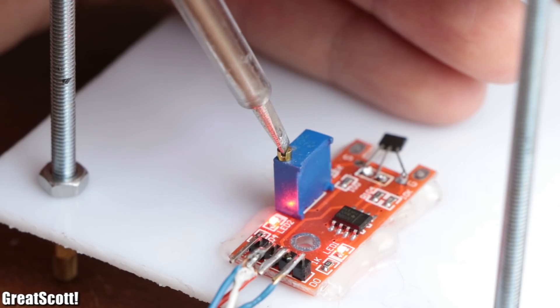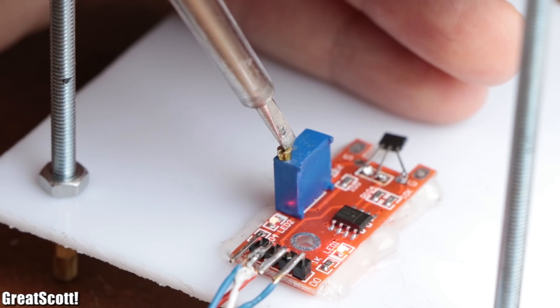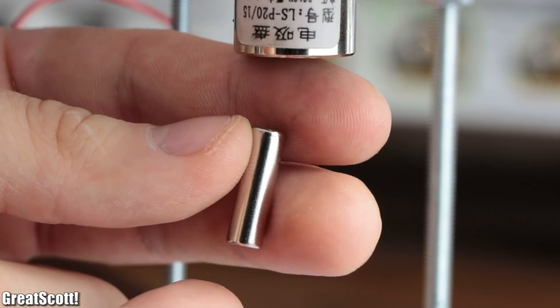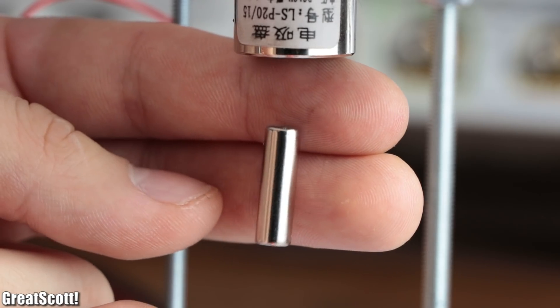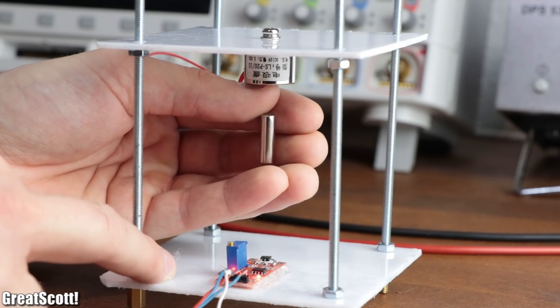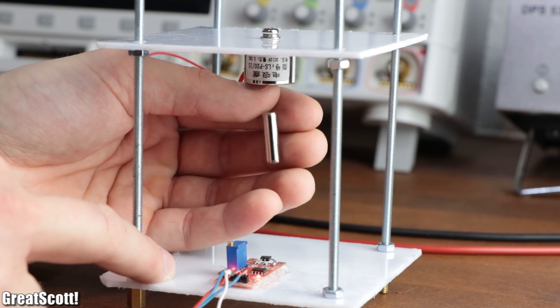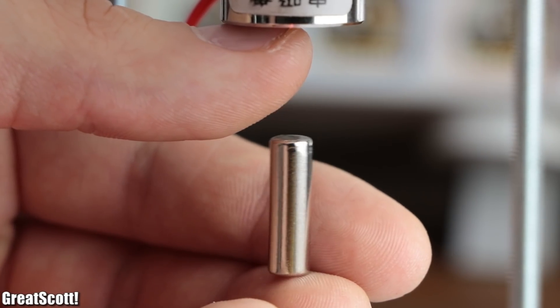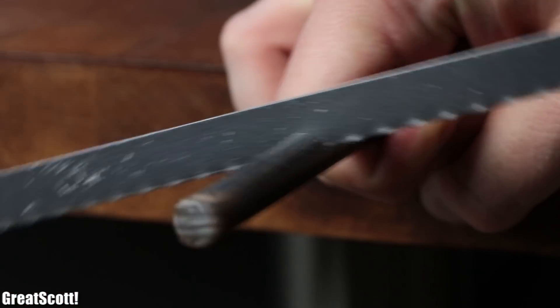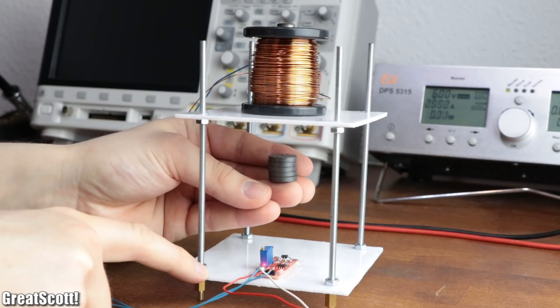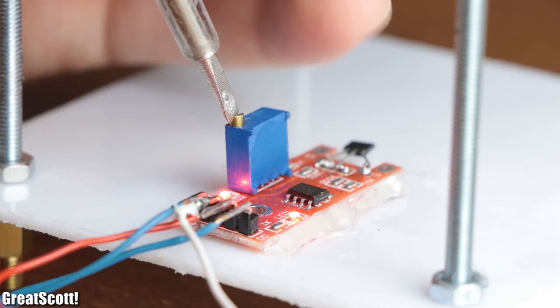And after fine adjusting the Hall effect threshold value through the potentiometer, I started trying to levitate a magnet which actually, to my surprise, did not work very well. As you can see, it seems like the threshold values for turning on or off the electromagnet are too far apart, which results in this rather fun to look at oscillation.